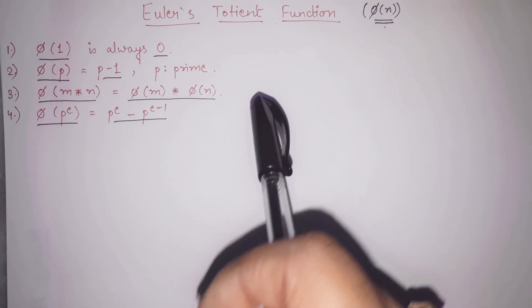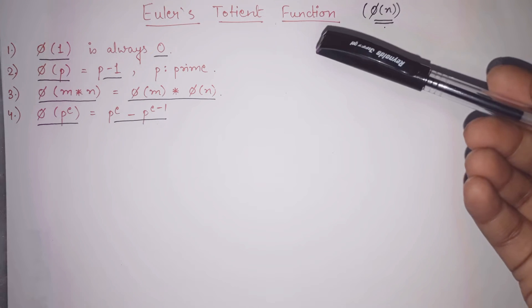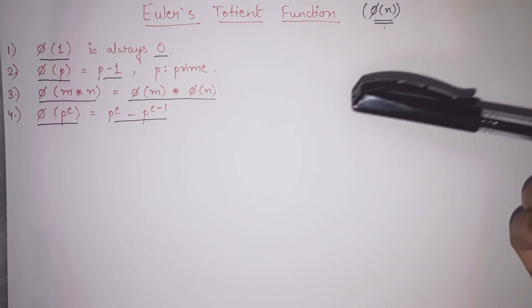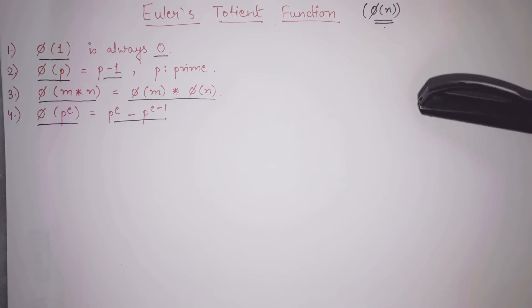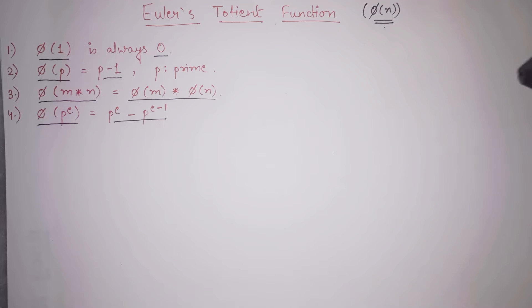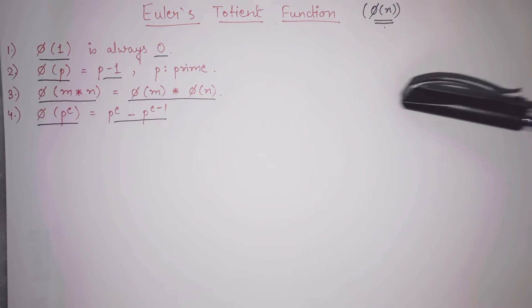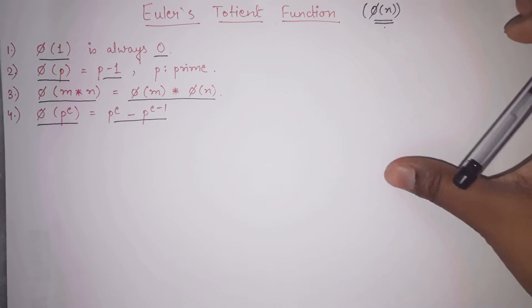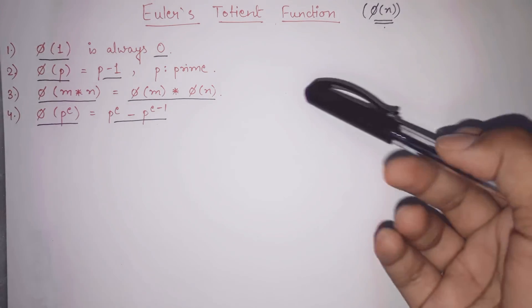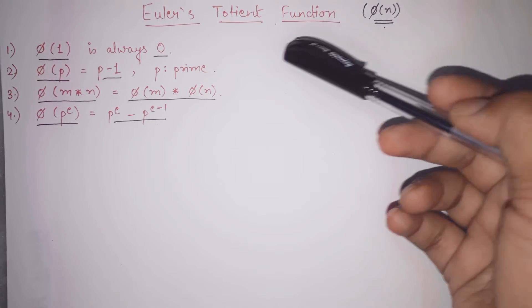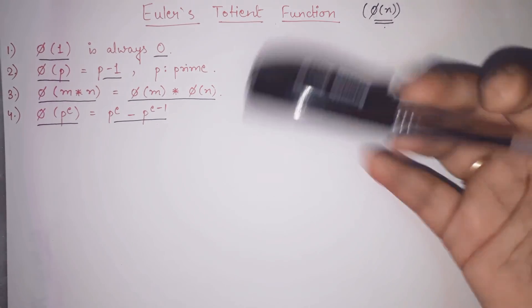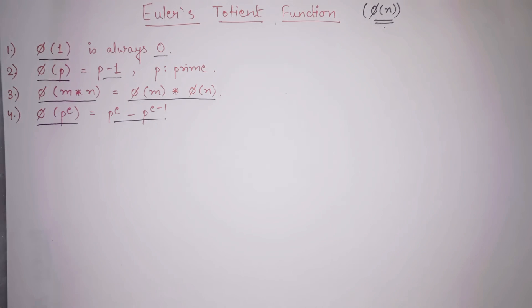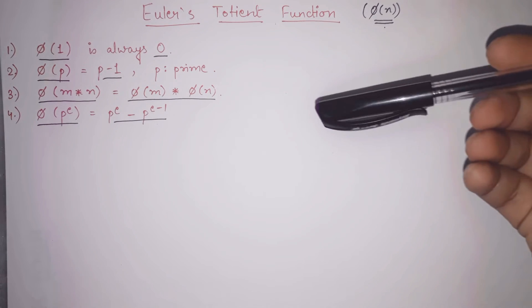This is one of the very important functions. You must have heard the name of RSA algorithm — RSA encryption algorithm. This function is used in that RSA algorithm and such big algorithms. It is basically a small function but it is used in the proof of many big results, so it is very important to understand.